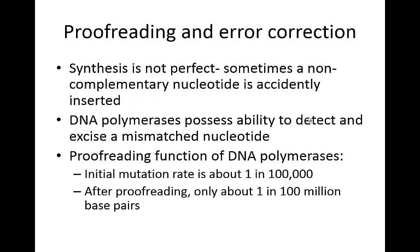Lastly, we have proofreading and error correction. When replication happens, it happens pretty quickly and synthesis is not perfect — sometimes a non-complementary nucleotide is accidentally inserted. Many of the DNA polymerases have the ability to detect and excise or remove a mismatched nucleotide. The initial mutation rate is about one in 100,000 base pairs. However, after proofreading, it's only about one in maybe 100 million base pairs. These are just random mutagenic events that provide the raw material needed for evolution to happen.